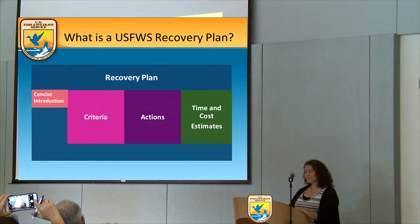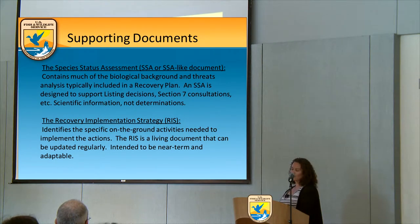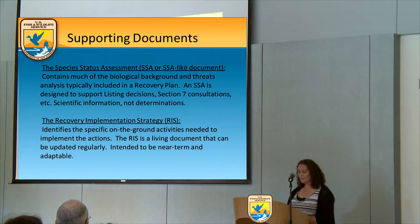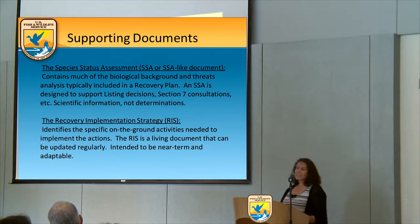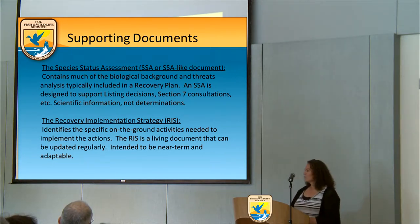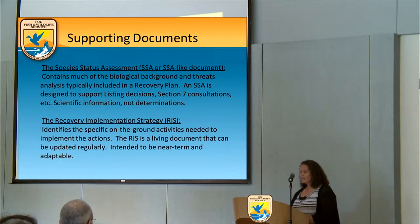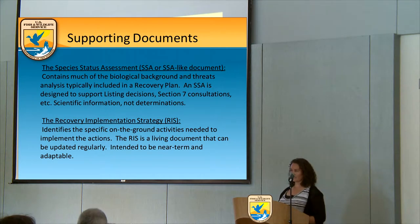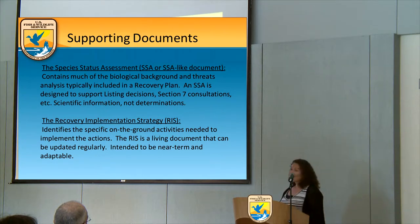Where does the rest of the information go? There are two supporting documents integral to this transition. One is a species status assessment, or SSA. The SSA contains much of the biological background and threats analysis that would typically be included in the introduction of a recovery plan. It's as much a process as it is a product — a framework for presenting and analyzing the available information on the species, ideally done when a species is first listed. We'll be going through a transitional phase where we develop SSAs or SSA-like documents for species.